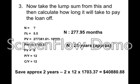So you're saving about two years. Two times 12 is how many months you save, multiplied by how much you're paying, which is $1,703. You're saving around about $40,000, which is pretty good for that $10,000 lump sum payment.